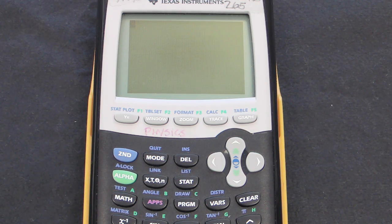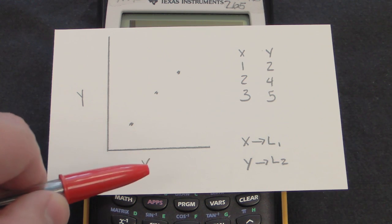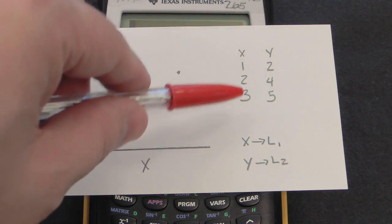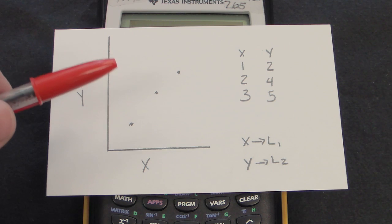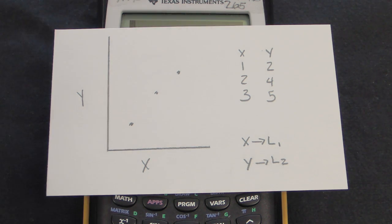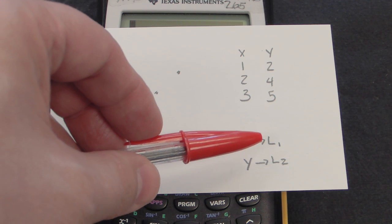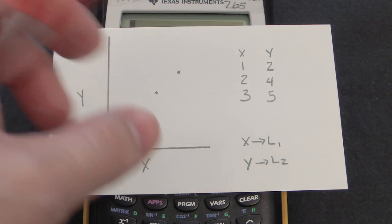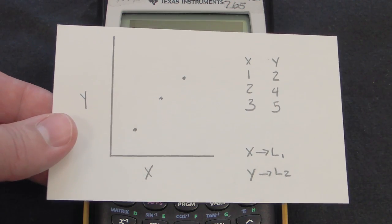This video is going to show you how to find the line of best fit on your TI graphing calculator. I have some data on a graph — in this case three points — with a y-axis and an x-axis. I have a table of x values and y values. I'm going to put the x data into L1 and the y data into L2, and then find the line of best fit between the two lists.